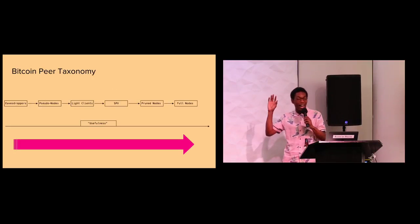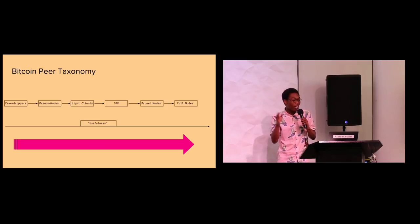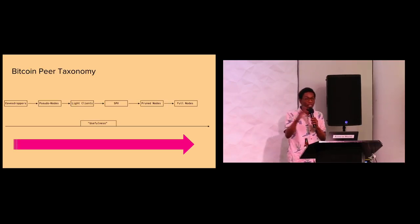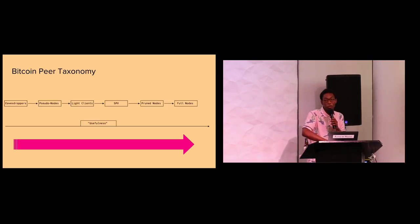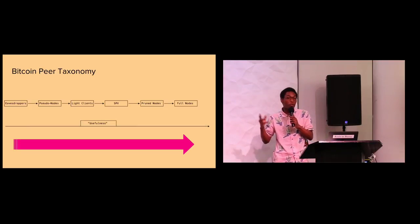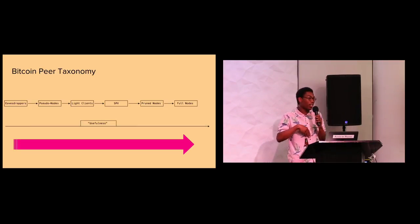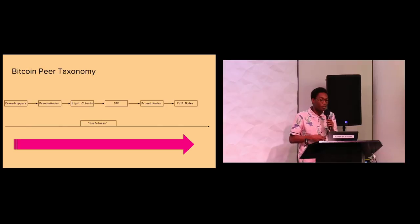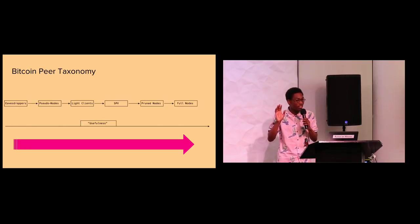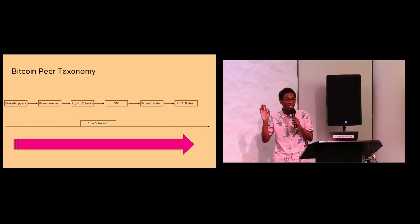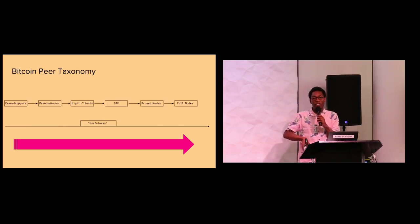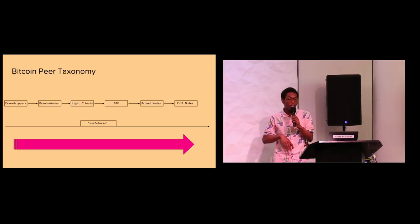So at a high level, this is what I call the usefulness meter for Bitcoin clients. All the way on the left, you have totally useless. All the way on the right, it's useful to connect to the network and actually contributing to other peers. On the left we have Ape Droppers — these are like chain analysis nodes that basically connect to you, have like 50 inbound connections, do mempool commands, and try to intersect all your transactions.